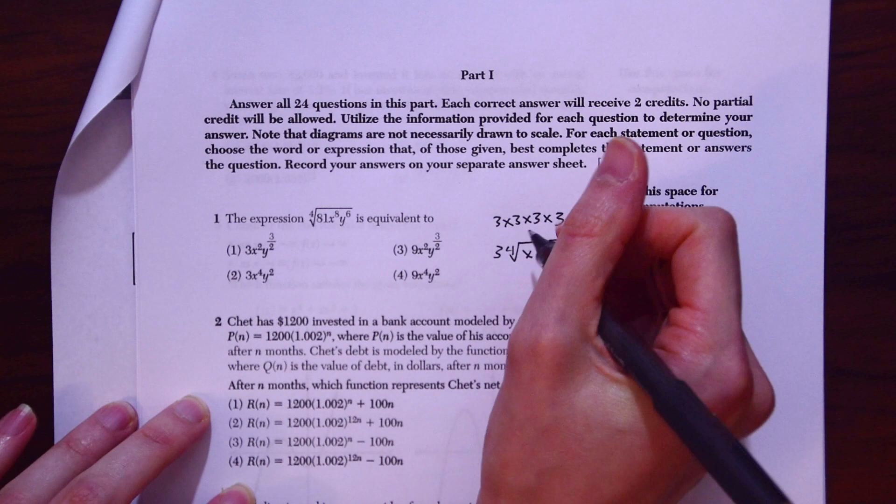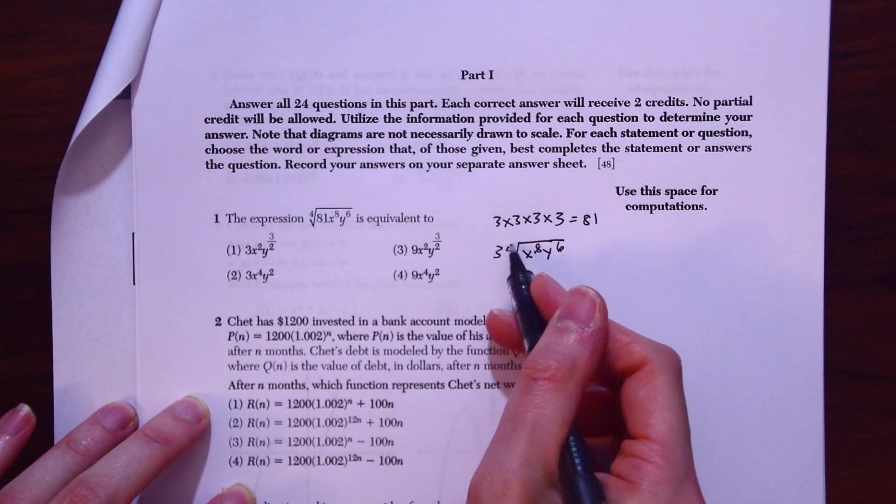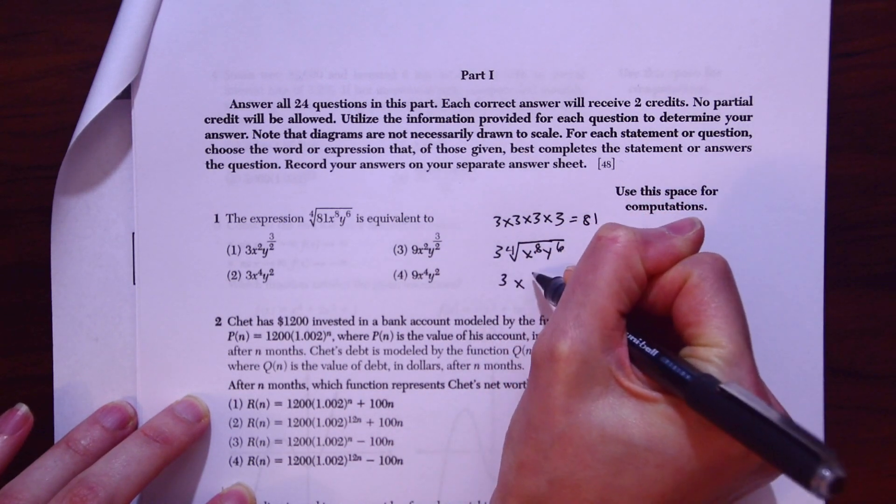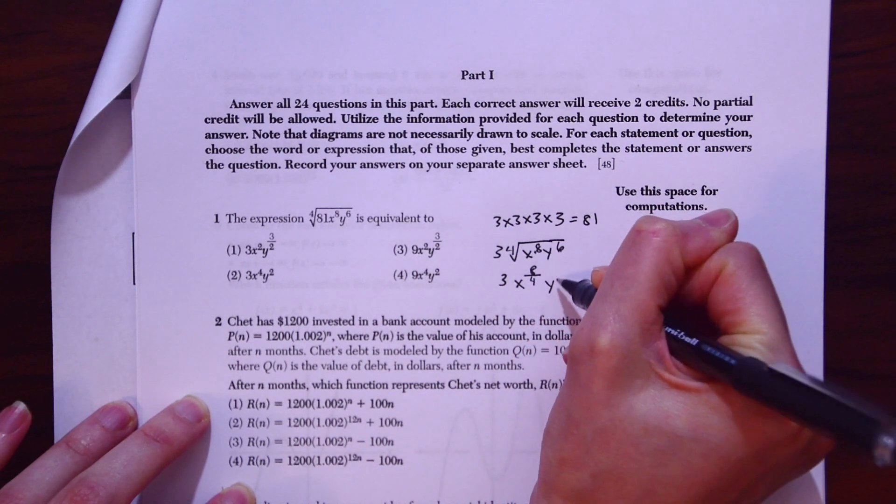So in order to get rid of those, what we're going to do is divide each exponent by what's here, which is a 4. So this will become 3 times x to the 8th divided by 4. And then y will become 6 divided by 4.